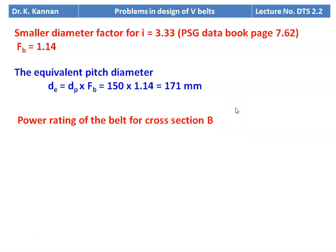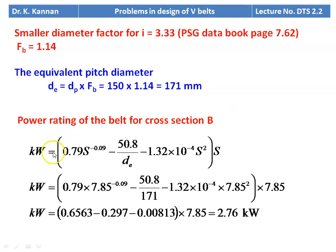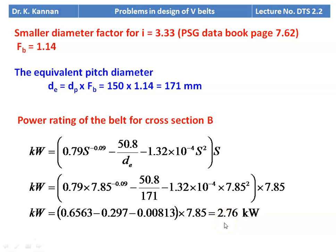Small diameter factor for i = 3.33, from page 7.62, Fb = 1.14. Equivalent pitch diameter De = dp × Fb = 150 × 1.14 = 171 mm. Power rating of belt for section B: 0.79S^(−0.09) − 50.8/De − 1.32×10^(−4) × S² × S, substituting values gives 2.76 kW.